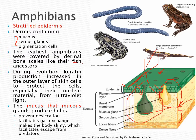The mucus produced from the mucus glands helps the animal prevent desiccation, aids in gas exchange, and makes the body slimy.